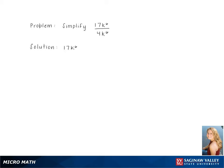To simplify 17k to the 6th over 4k to the 6th, we start by leaving 17 over 4 out front and multiplying it by k to the 6 minus 6, using the formula and subtracting the exponents.